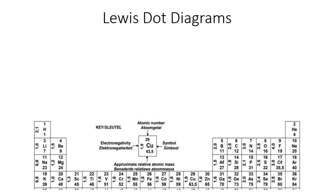In this lesson we're going to talk about Lewis dot diagrams. Maybe you've seen them in class where your teacher draws, for example, a certain element and then puts either dots or maybe they use x's. That's what we're going to learn about.